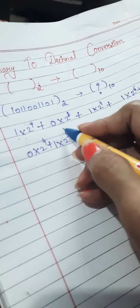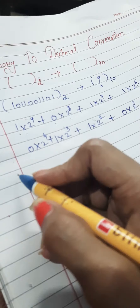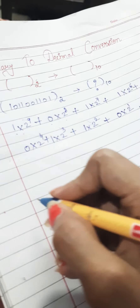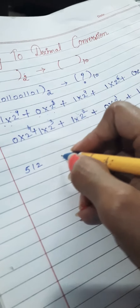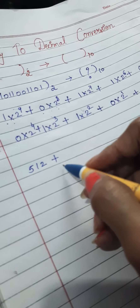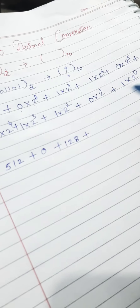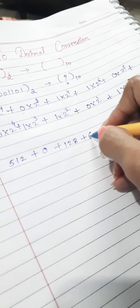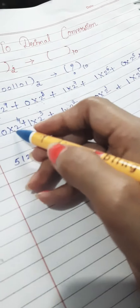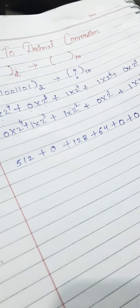Now, there are 1s and 0s. If we multiply a number with 0, it will become 0. So 2 to the power 9 is 512. Then plus 2 to the power 7, which is 128. Then plus 2 to the power 6, which is 64. Then 2 to the power 5 becomes 0 because of the 0 multiplier. 2 to the power 4 also goes to 0. Then 2 to the power 3 is 8.